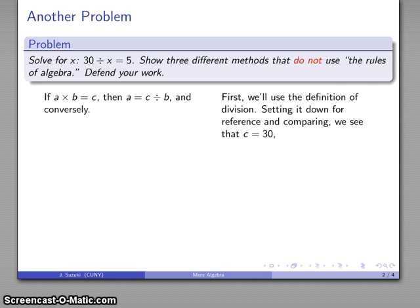Let's make that comparison. That tells me that c is 30, b is x, and a must be 5. So I have 5 equals 30 divided by x, that's my starting statement.